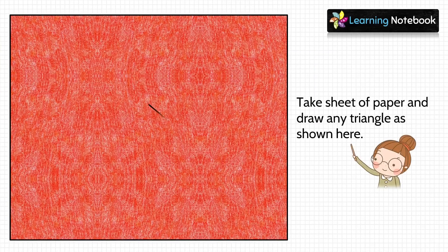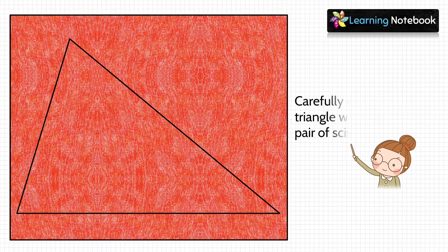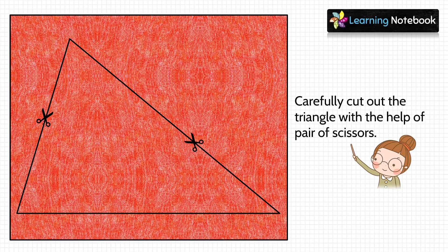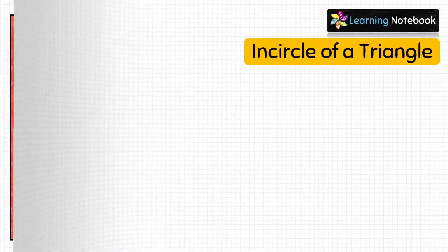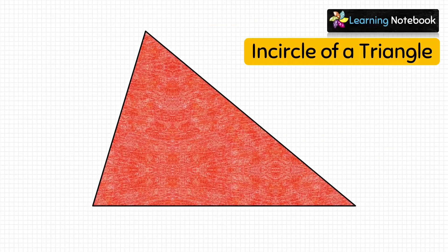Now let's start with the activity. In the first step, take a red sheet of paper and draw any triangle on it as shown. Then carefully cut out this triangle using a pair of scissors. Now let's name this triangle as ABC.